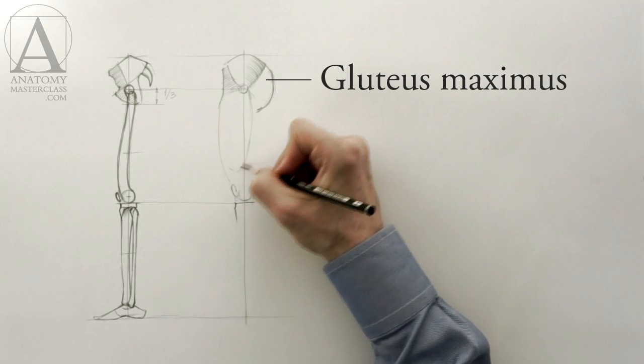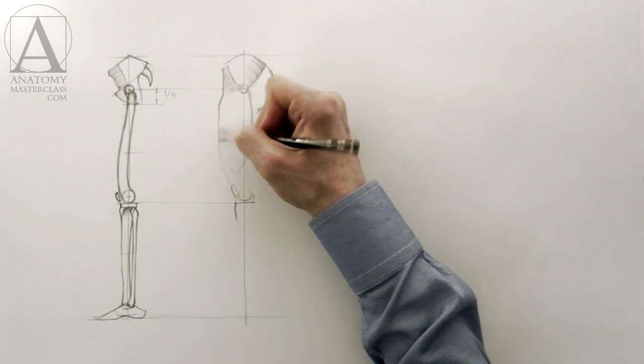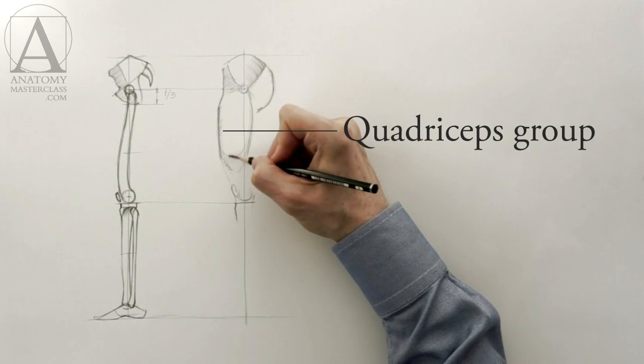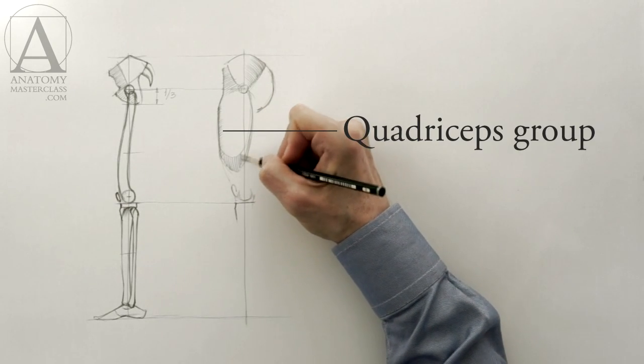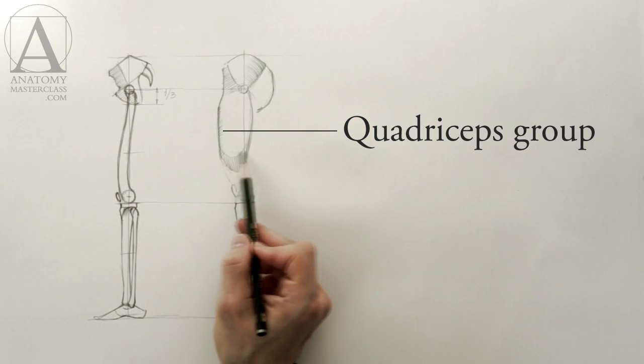The buttock part is defined as the gluteus maximus muscle. The front portion of the thigh is occupied by the quadriceps group. The word quadriceps means four heads in Latin.